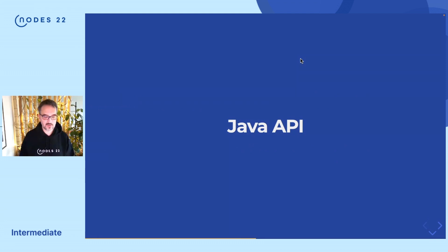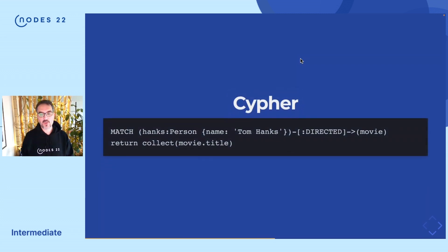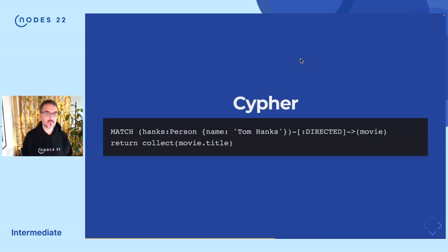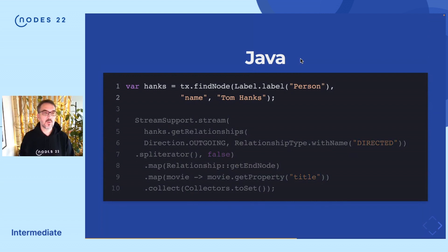The other part you have is what we call the Core Java API. To see what it would look like, I'll convert a Cypher statement into Java code. The Cypher statement is extremely simple — we basically look for a person with the name Tom Hanks, follow the directed relationship to the movies, and then collect the movie titles into a set. In Java, from the transaction, you call the find function specifying the label of the node you are looking for and the property name.